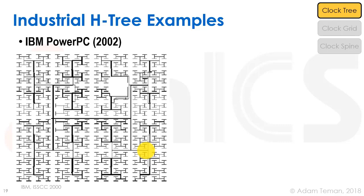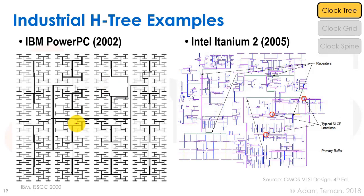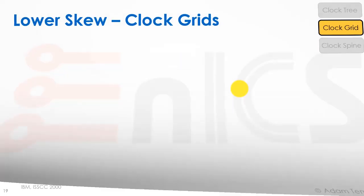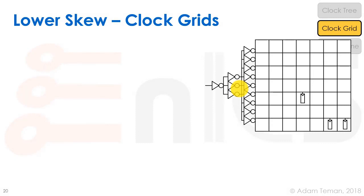H-trees have been tried: IBM showed their PowerPC architecture at ISSCC with H-trees visible in the conceptual design, but it still had to route around obstacles. The Itanium 2, pictured in CMOS VLSI Design, shows a routing that looks somewhat like H's in some places but is very far from a real H-tree. In practice we reach high skew, so we can take a different approach: building a clock grid.